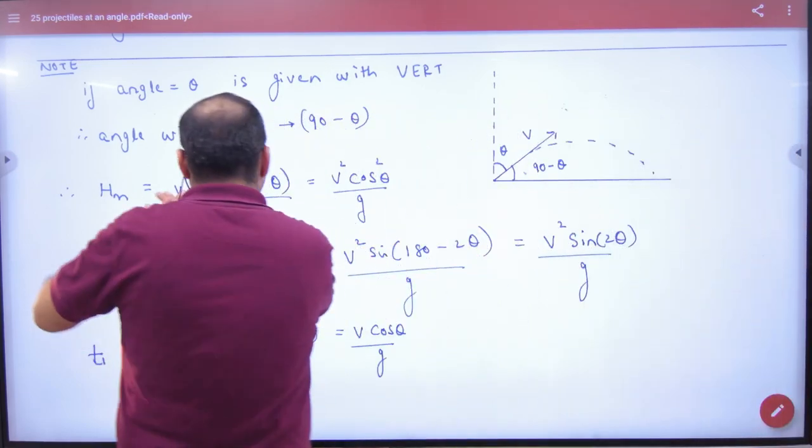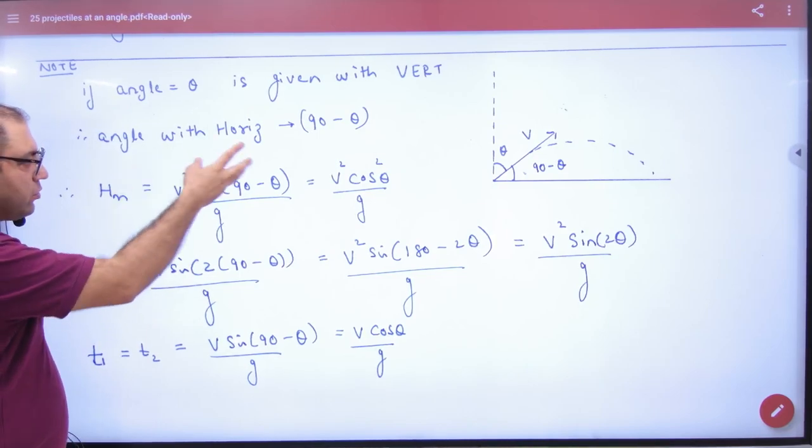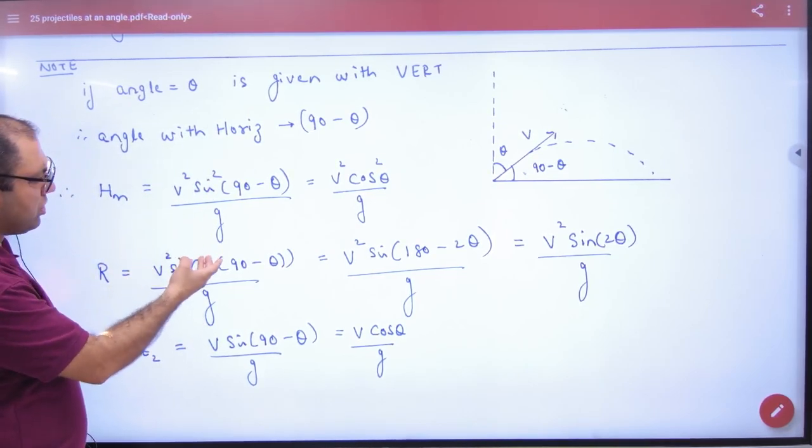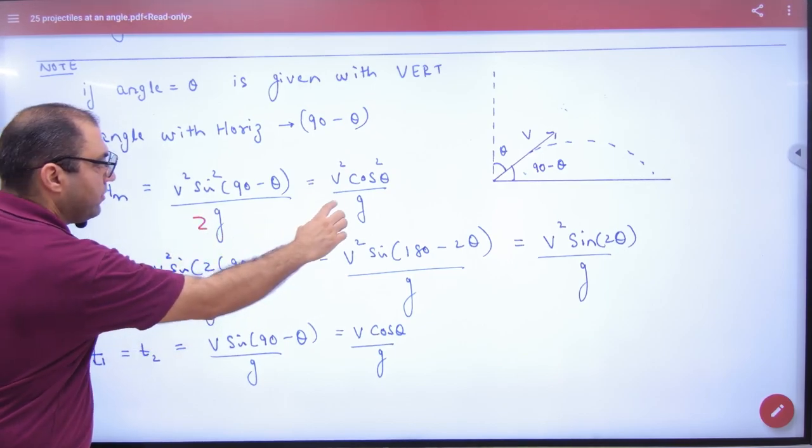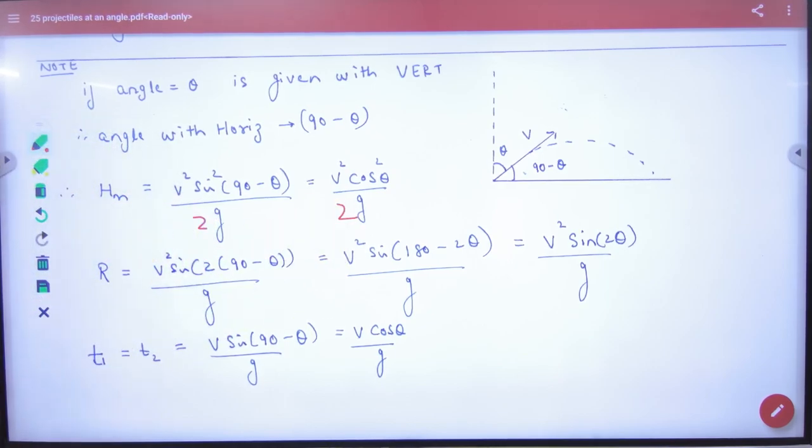So when maximum height formula, V square sine square theta by 2G. 2G will not come here, 2G will come here. It's a wrong formula. V square sine square theta by 2G. Maximum height formula is V square sine square theta by 2G.